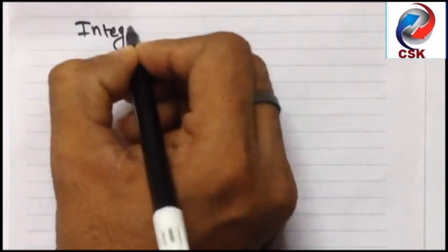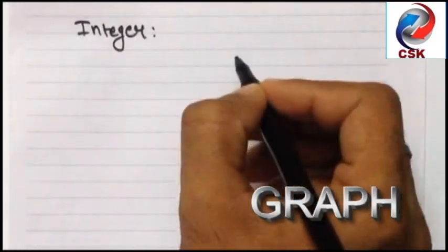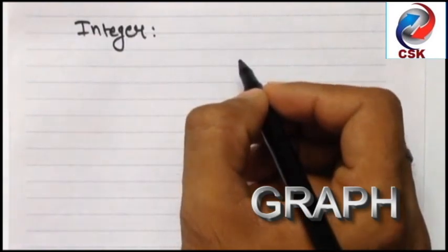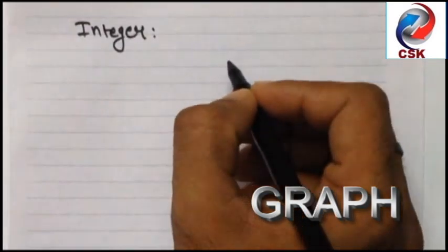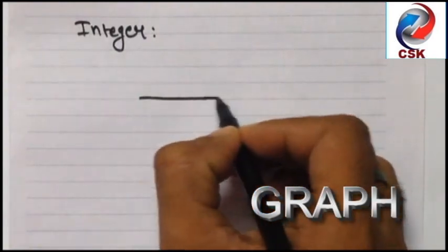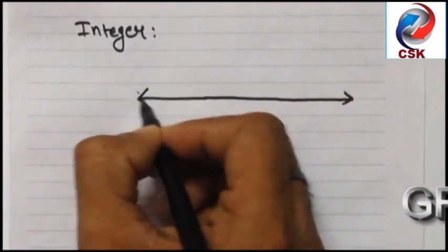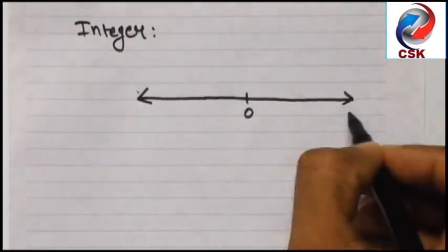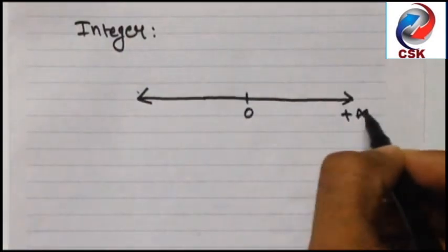Now let's try to understand the graph of an integer number. Suppose this is our x-axis. The midpoint, let me consider this as 0, and rightmost is +∞, leftmost is -∞.